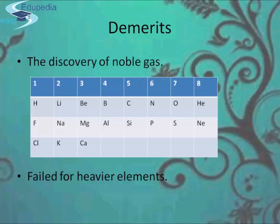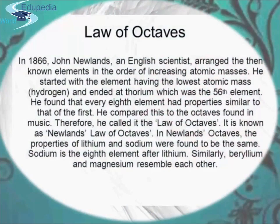So friends, here we discussed the law, learned about the scientist, and also learned about the merits and demerits. To conclude: in 1866, John Newland, an English scientist, arranged the then-known elements in the order of increasing atomic masses. He started with the element having the lowest atomic mass, hydrogen, and ended with thorium, the 56th element. He found that every eighth element had properties similar to the first, and he compared this to the octaves found in music. Therefore, he called it the Law of Octaves, also known as Newlands Law of Octaves. In Newlands' octave, the properties of lithium and sodium were found to be the same, and sodium is the eighth element after lithium. Similarly, beryllium and magnesium resemble each other.